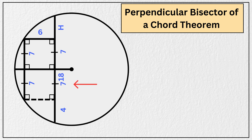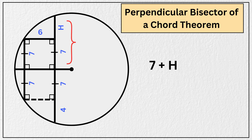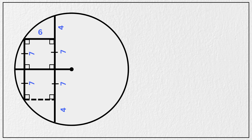Applying the same perpendicular bisector theorem to this chord as well gives us 7 plus h on one side, and 7 plus 4 on the other side. Therefore h must be equal to 4 units. Let's clean this up as we jump to the next part.